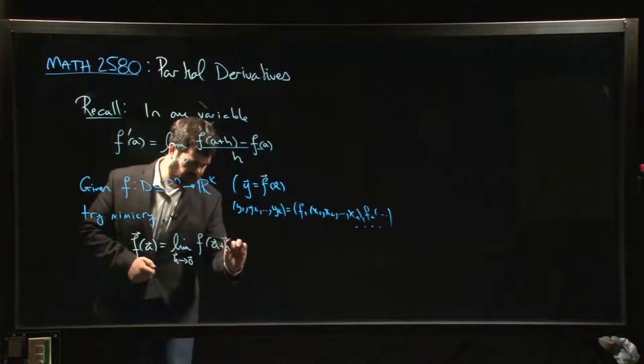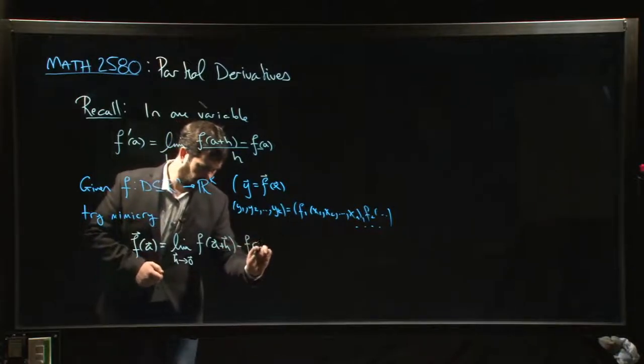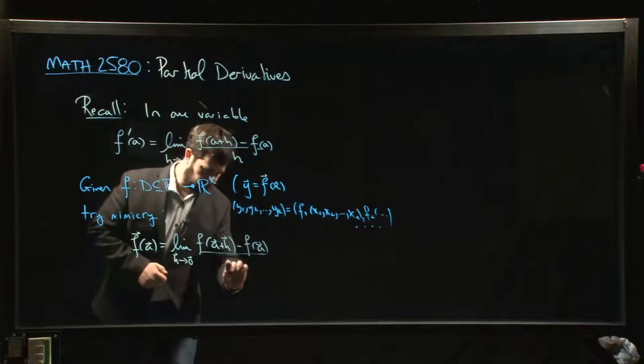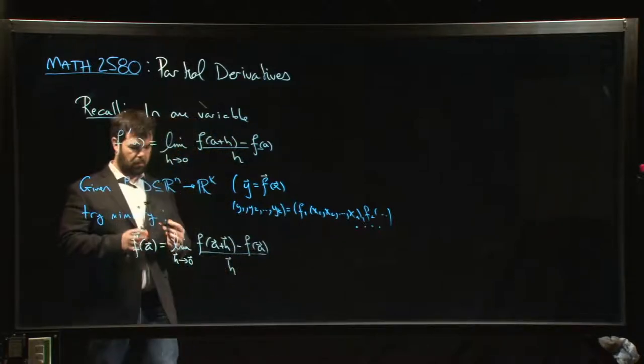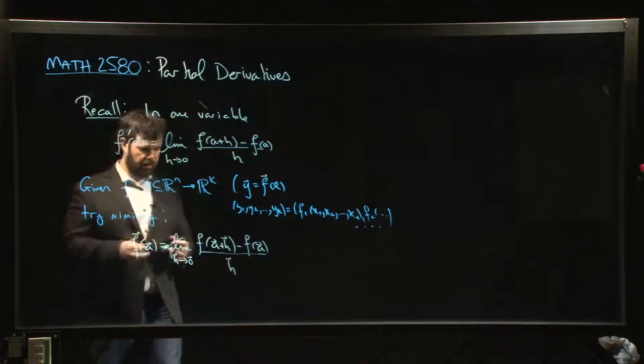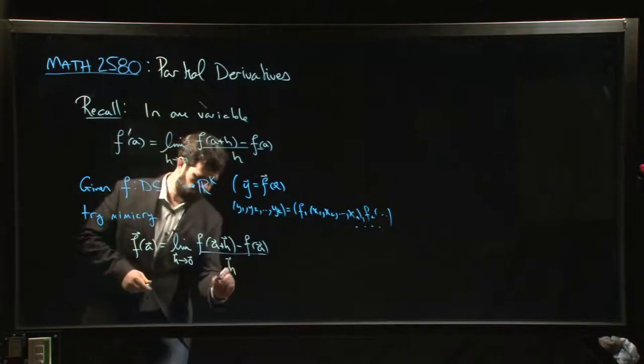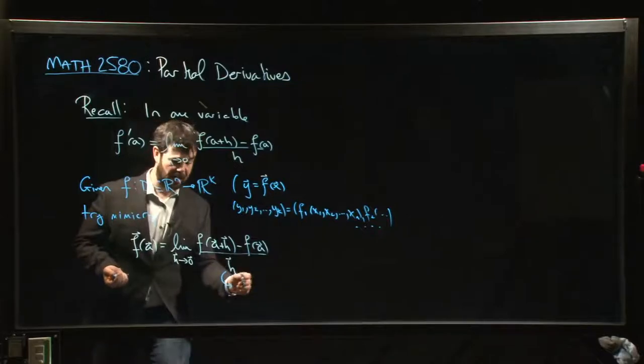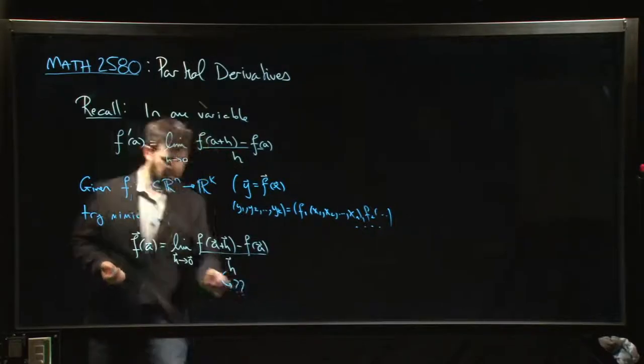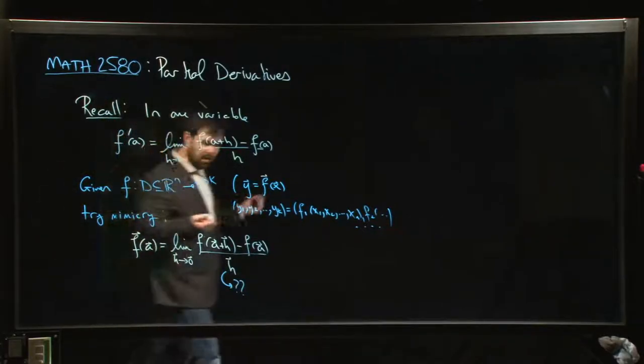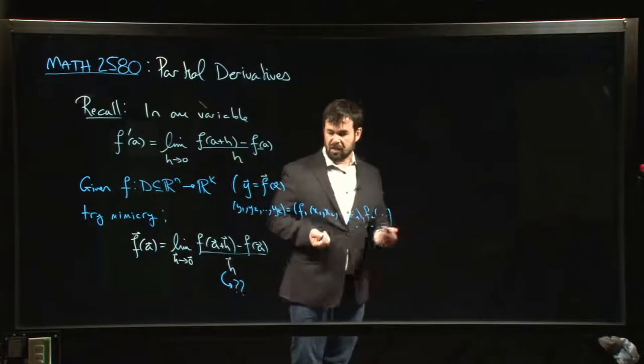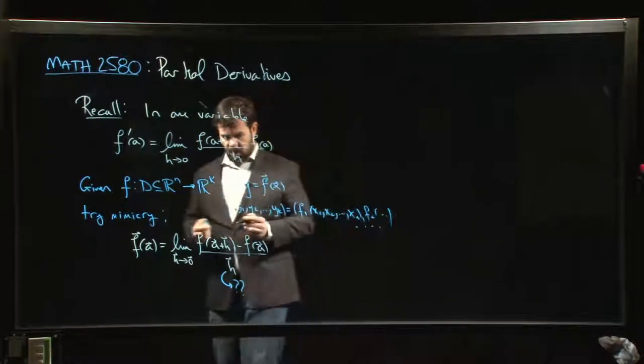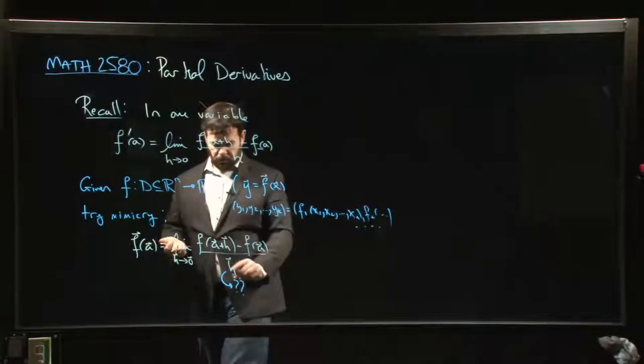Okay, well now here's your first issue. What does it mean to divide by h? h is a vector, so there's no notion of division for vectors. You can only divide by numbers. So how do you fix it? Well it turns out there's a fix.